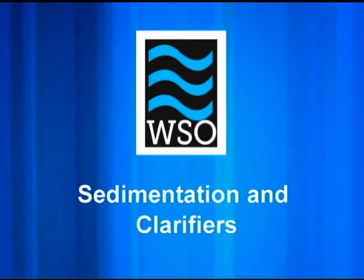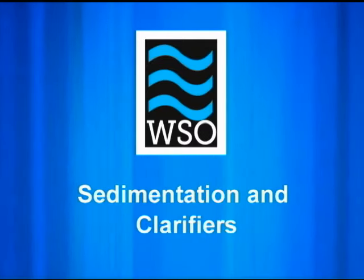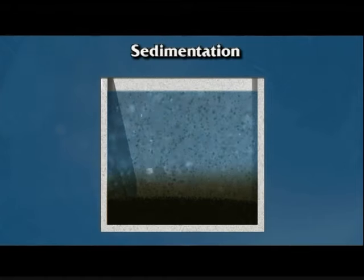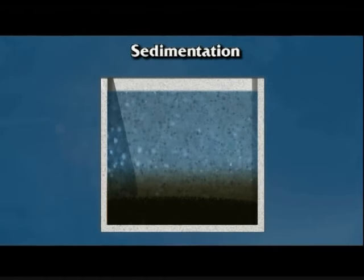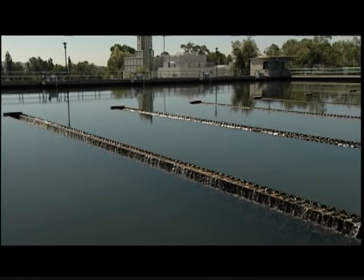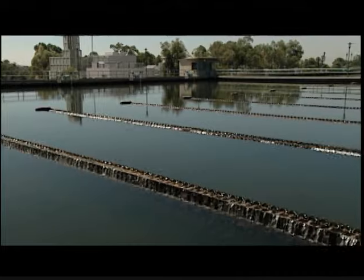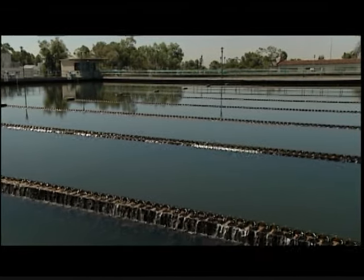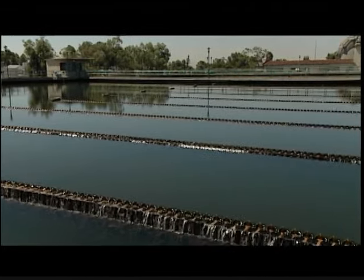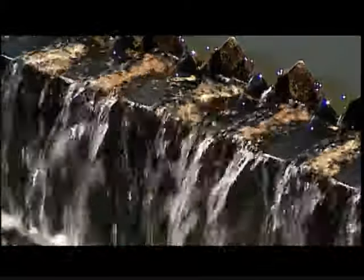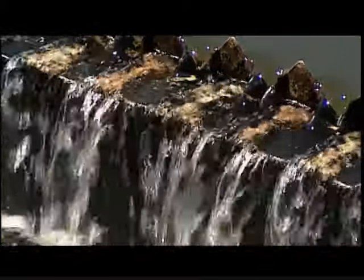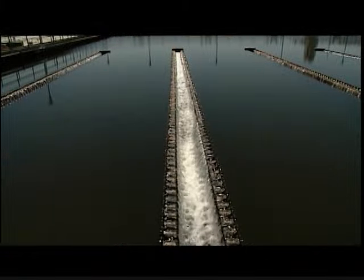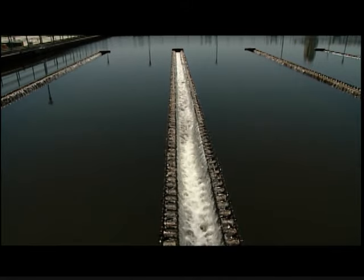Once proper floc has formed, it must be separated from the water through sedimentation or clarification. This process takes place in a rectangular, square, or round tank called a sedimentation basin or clarifier. It should be noted that direct filtration plants do not include a sedimentation or clarification unit process.